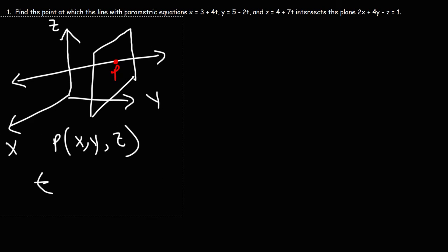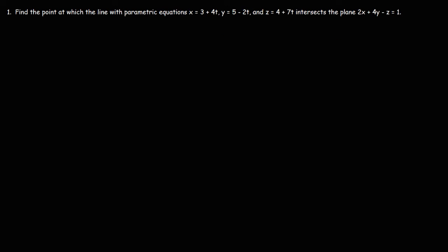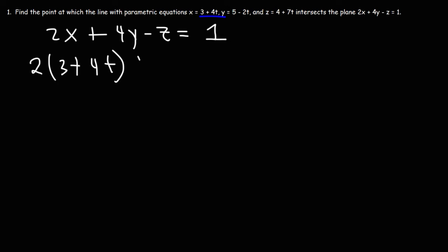Feel free to pause the video if you want to try. What we're going to do is, in the parametric equations, substitute 3 plus 4t for x in the equation of the plane, and do the same thing for y and the same thing for z. So let's start with the equation of the plane: 2x plus 4y minus z is equal to 1. Let's begin by replacing x with 3 plus 4t, then replacing y with 5 minus 2t, and then replacing z with 4 plus 7t.